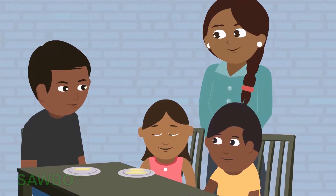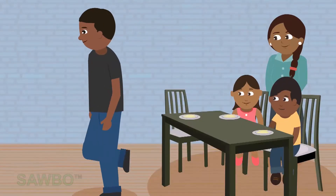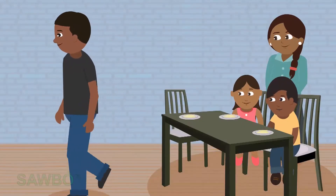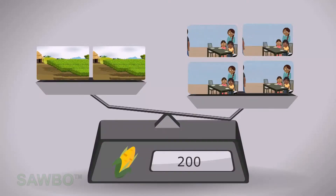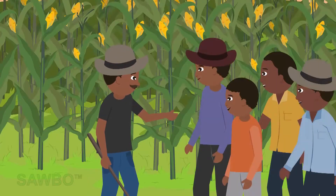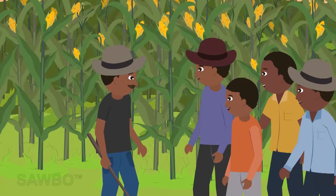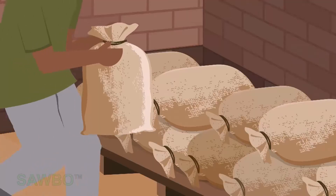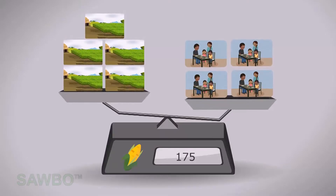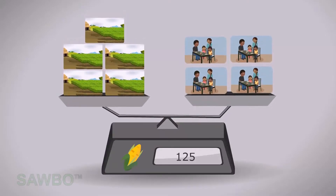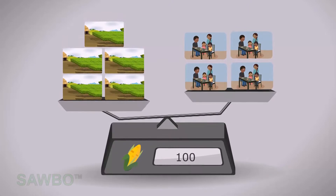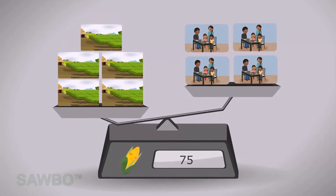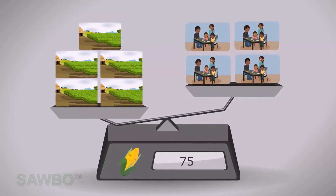Since the price of maize is high, some people decide to invest in maize farming. Next season, the maize harvest has increased due to more maize farmers. Due to this strong oversupply of maize, the price goes down from 200 units per bag to 75 units per bag.